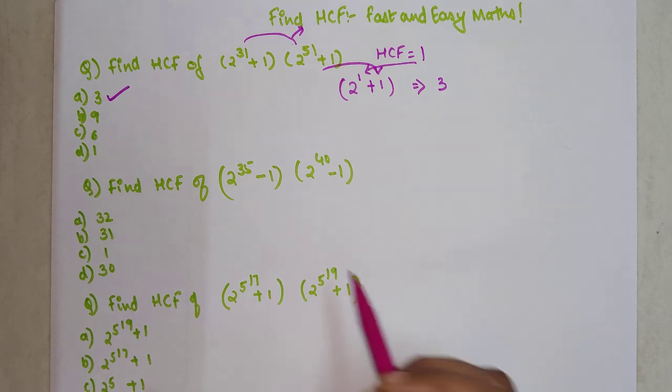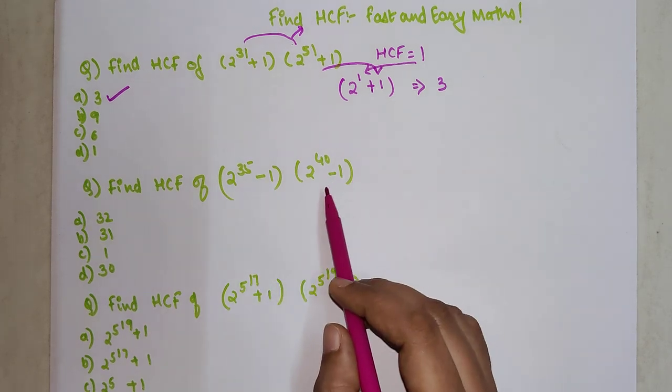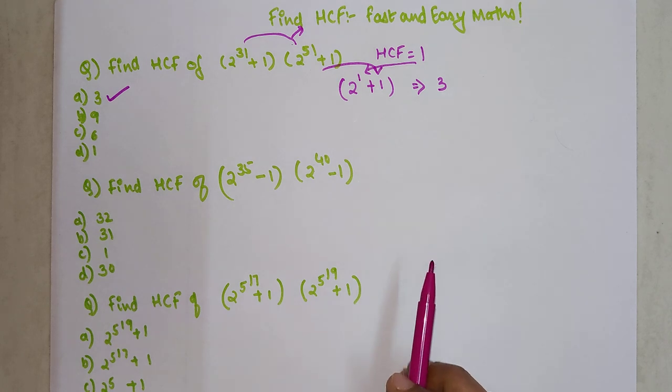Similarly, here we have 2^35 - 1 and 2^40 - 1.